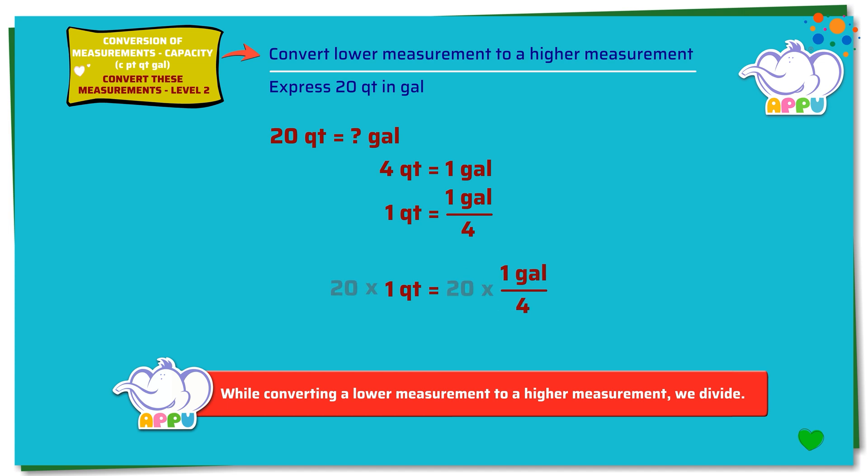Multiplying both sides by 20, we get 20 times 1 quart equals 20 quarts times 1 gallon by 4. Here, 4 divides 20 five times. So 20 quarts equals 5 gallons.